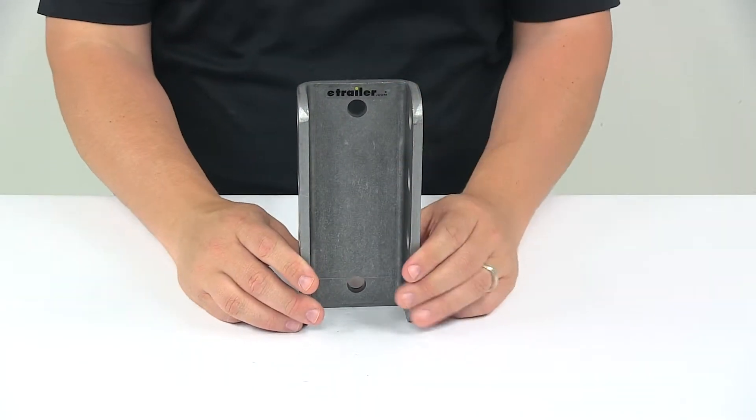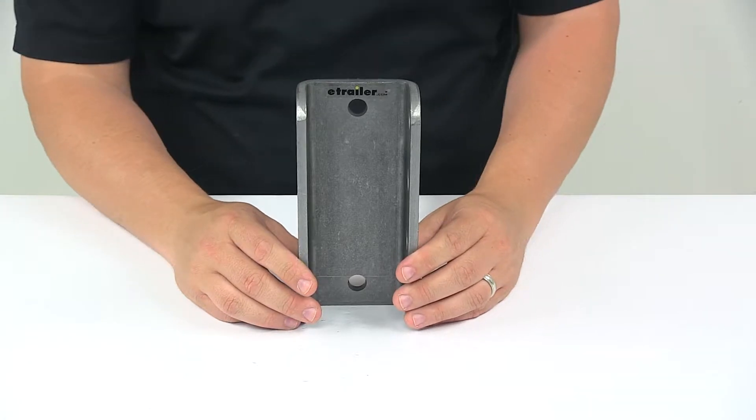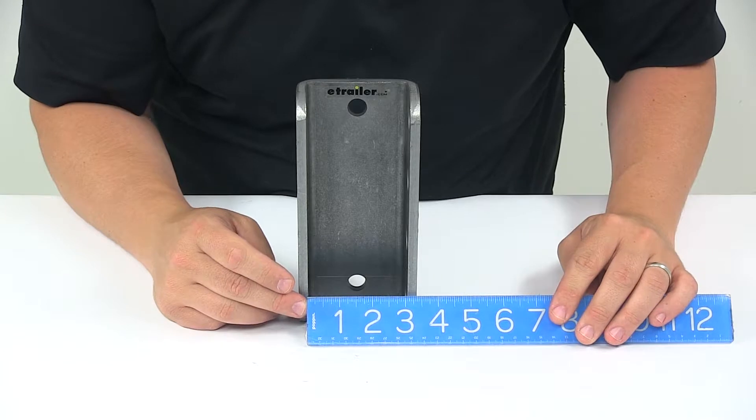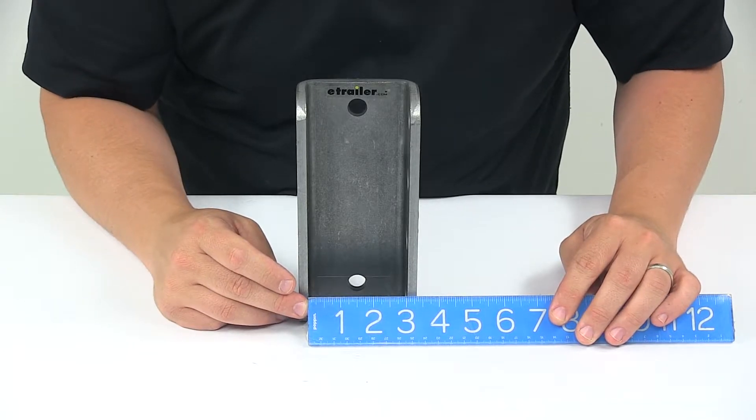This is designed to work with towing components that will fit inside of a three inch wide channel bracket. So if we measure inside edge to inside edge, that measures right around three inches.